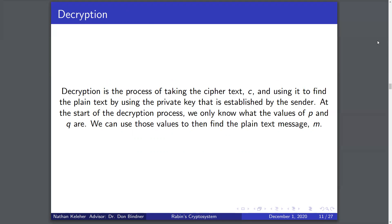The decryption process takes the ciphertext C and uses it to find the plaintext by using the private key established by the sender. The private key is known by Alice, so she'll use it to decrypt C and find the plaintext message lowercase m. At the start of the decryption process, Alice will only know the two prime values P and Q, and those are used to find lowercase m, the plaintext message.